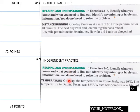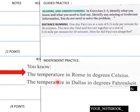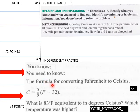And then for the independent, it's your lucky day students, in your notebook or actually on your class worksheet. You know the temperature in Rome in degrees Celsius, the temperature in Dallas in degrees Fahrenheit. So you need to know the formula for converting Fahrenheit to Celsius, which is Celsius equals 5 ninths times F minus 32. And then what is 83 degrees Fahrenheit equivalent to in degrees Celsius? Which temperature was higher? So here's the formula here that you need to do in your independent practice.